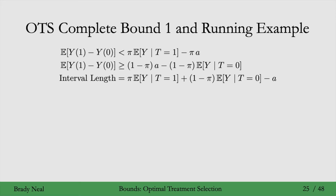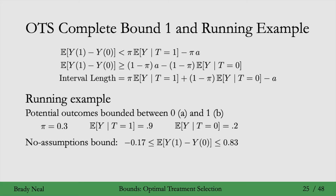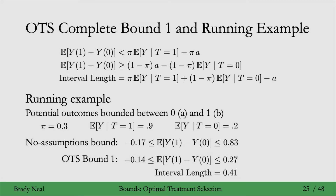Putting it all together, here is the OTS upper bound and lower bound. Subtracting upper bound minus lower bound gives the interval length. Plugging in the numbers from our running example, the ATE must be between minus 0.14 and 0.27, an interval length of just 0.41. This is much smaller than the interval length of 1 from the no assumptions bound. Moving from no assumptions to OTS has cut the interval from 1 to 0.41.